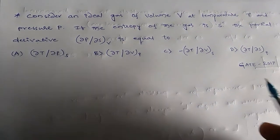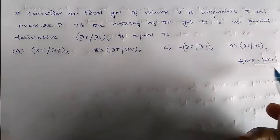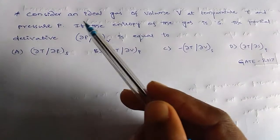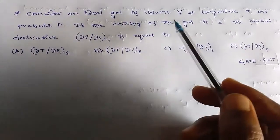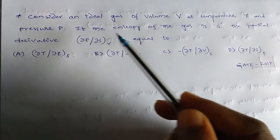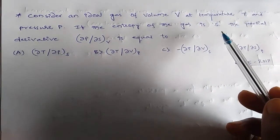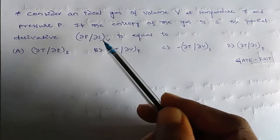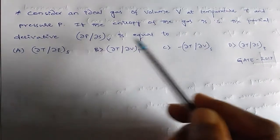Hi, this is your chem master. This question happened in GATE 2017. The question is: consider an ideal gas of volume V at temperature T and pressure P. If the entropy of the gas is S, the partial derivative ∂P/∂S at constant V is equal to: